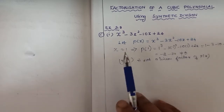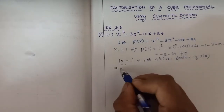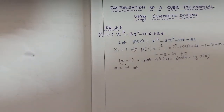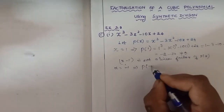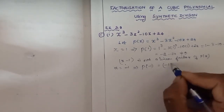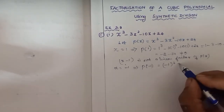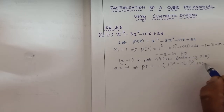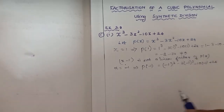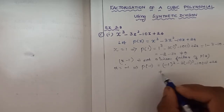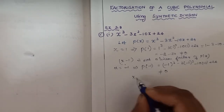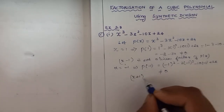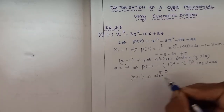Next we try x equals minus 1. We calculate p(minus 1): p(minus 1) = (minus 1) whole cube minus 3 into (minus 1) whole square minus 10 into (minus 1) plus 24. This is also not equal to 0, so x plus 1 is also not a linear factor.